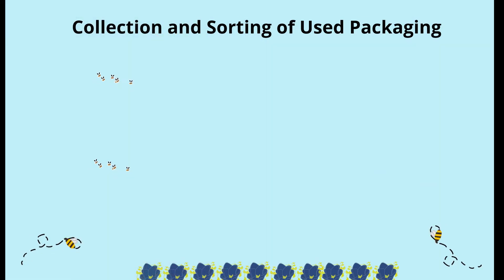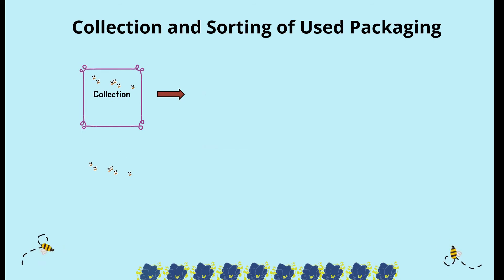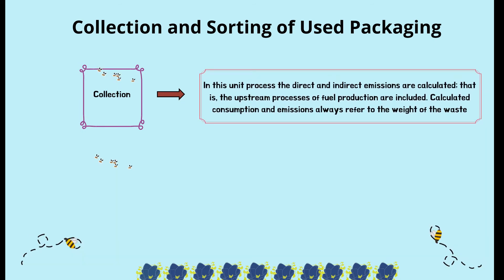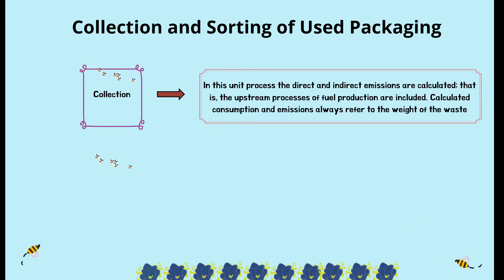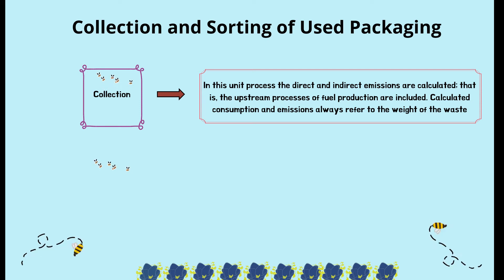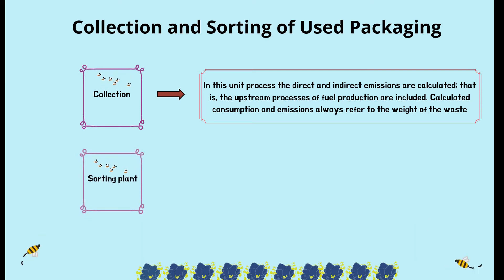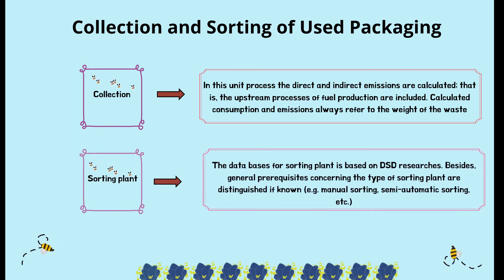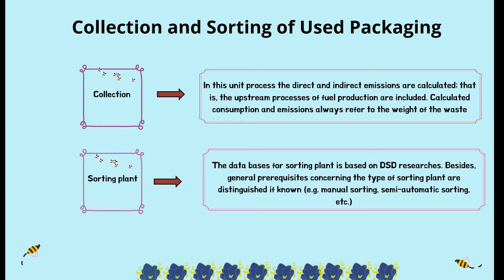Collection and sorting of used packaging. For collection, unit processes of direct and indirect emissions are calculated, meaning the upstream processes of fuel production are included. Calculated consumption and emissions always refer to the weight of the waste. For sorting plants, the database is based on DualSystem Deutschland (DSD) research. General prerequisites concerning the type of sorting plant are distinguished where known, e.g., manual sorting, semi-automatic sorting, etc.